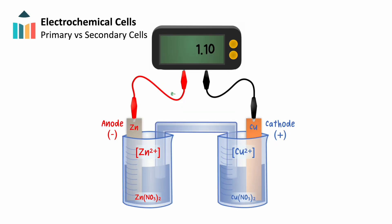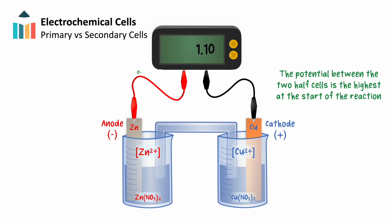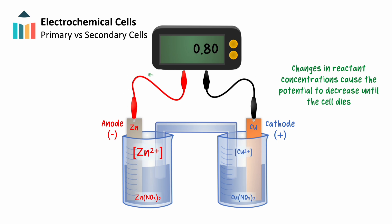Let's talk about cell potential and how we see its impact in common applications of voltaic cells. In a conventional voltaic cell, the potential between the two half-cells is at its highest in the initial stages of the redox reaction, and this potential drives the reaction forward. Over time, the cell discharges — the concentration of reacting ions increases in the anode half-cell and decreases in the cathode half-cell. This lowers cell potential until one of the reactants is completely used and the redox reaction can no longer proceed, at which point current stops flowing.